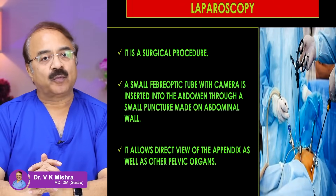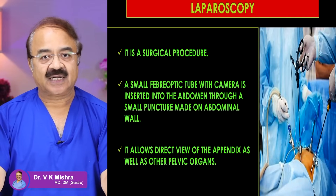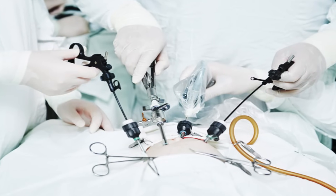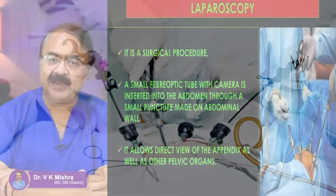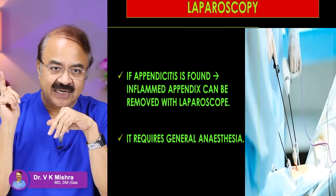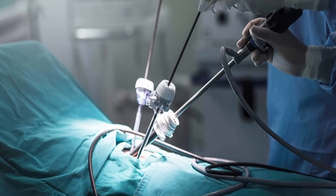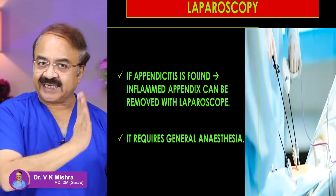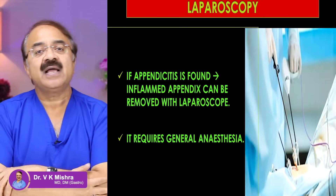The next one is laparoscopy। कभी-कभी हमें laparoscopy की जरूरत पड़ती है। Laparoscopy is a surgical procedure - इसमें abdomen में बहुत छोटे-छोटे puncture करके एक camera tube पास किया जाता है। बाकी सब organs भी दिखाई देते हैं including pelvic organs। अगर लगता है कि appendicitis है या appendicular inflammation है, तो with the help of laparoscopy, appendix को निकाला भी जा सकता है। लेकिन laparoscopy general anesthesia माँगती है - बिना general anesthesia के नहीं की जा सकती। इसका मतलब यह है कि पहले blood test, X-ray, urine examination, ultrasound, CT scan कराएं, और इसके बाद अगर ज़रूरी लगे तो patient को laparoscopy के लिए subject किया जाना चाहिए।